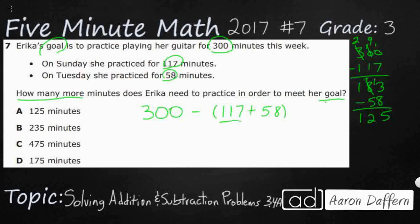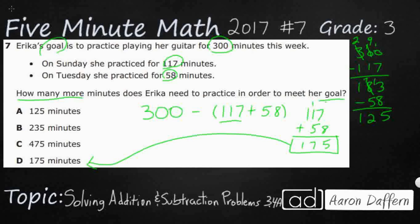Some of you will probably just add 117 and 58 first. So 117 plus 58: 7 plus 8 is 15, carry the 1, giving 175. Now notice that 175 is an answer choice right there, but that is not what we're looking for — that's how many minutes she's practiced so far. We need to know how many more. 'How many more' always tells us we're going to subtract something. So now I need to subtract 175 from 300.